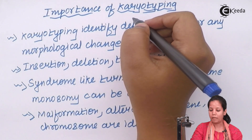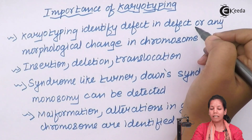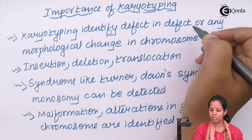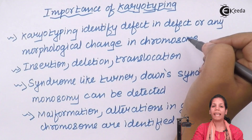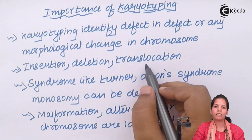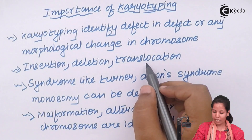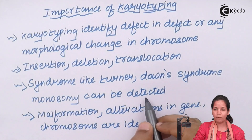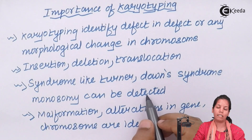Karyotyping plays a very important role in identifying defects or any morphological change in the chromosomal region. This morphological change could be any deletion, insertion, or even translocation of chromosomes, which happens in certain diseases like Turner syndrome, Klinefelter syndrome, Down syndrome, etc. Whenever these syndromes occur, it could be either the autosomes or the sex chromosomes that increase, depending upon the syndrome that a person has.